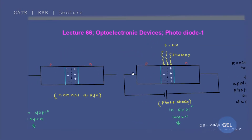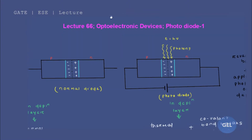Welcome to the GATE ESC lecture. This is lecture number 66 of EDC, covering the fourth module on optoelectronic devices. In this video, we are going to cover the photodiode — one of the most important topics in this module. We will discuss three points: what is a photodiode, how a photodiode works as a photoconductive cell, and how a photodiode works as a photovoltaic cell.